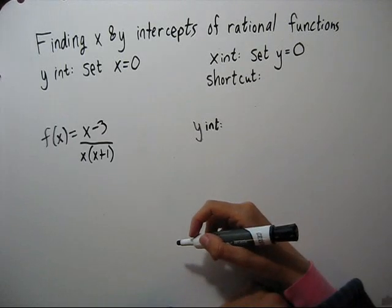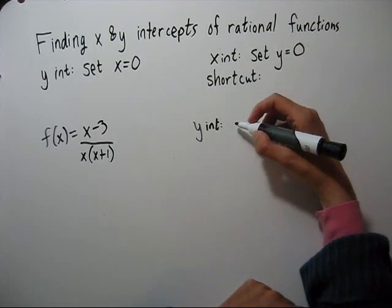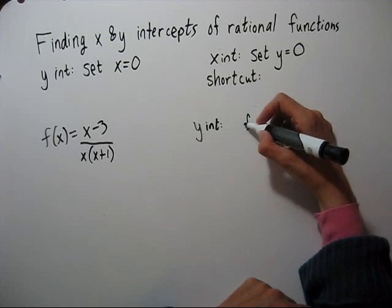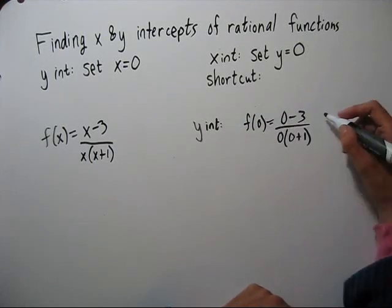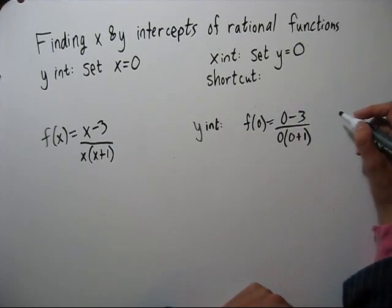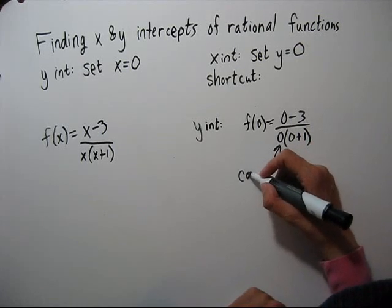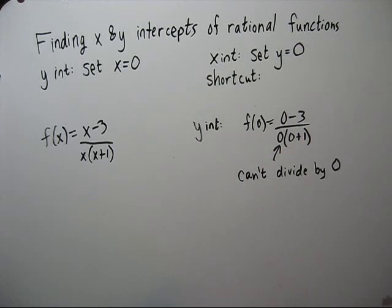To find the y intercept, let's set x equals zero. We have a zero in our denominator, but we can't divide by zero. That's undefined. So there is no y intercept.